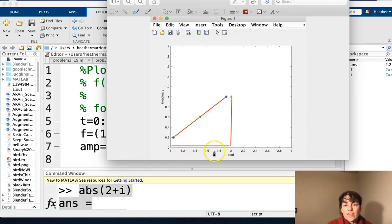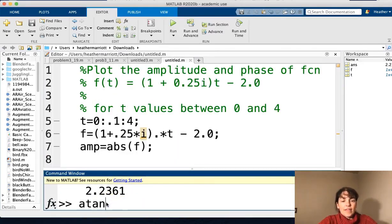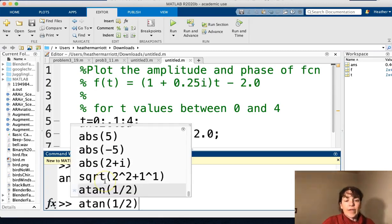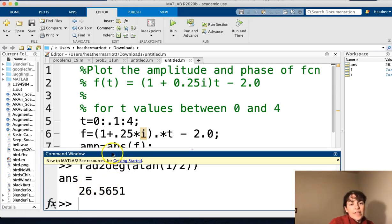We know that the opposite is 1, and the adjacent is 2. And so we could say that is going to be equal to this number right here, and that's going to be a number in radians. So if I wanted to go from radians to degrees, I could find out that that whole angle there is about 26.6.